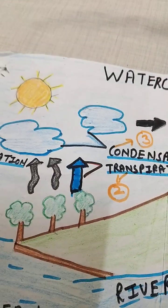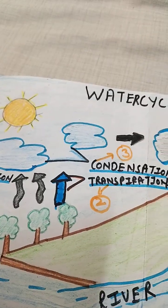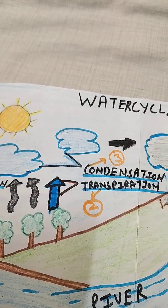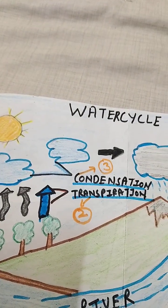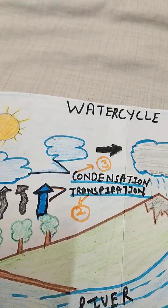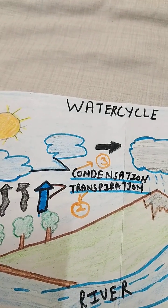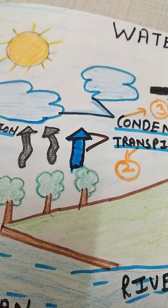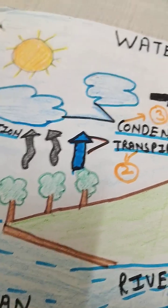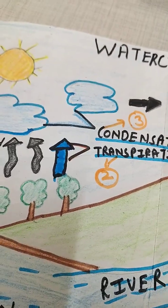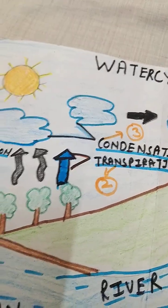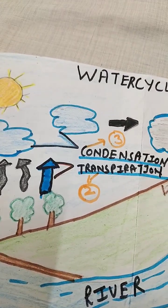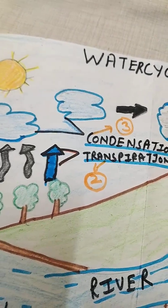The third point is condensation. In condensation, that water vapor cools down and forms clouds in the sky. You can see the clouds being formed by the water vapor as it cools down. This is called condensation, the third step in the water cycle.